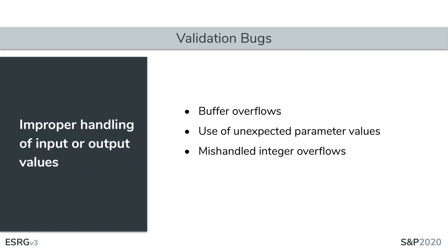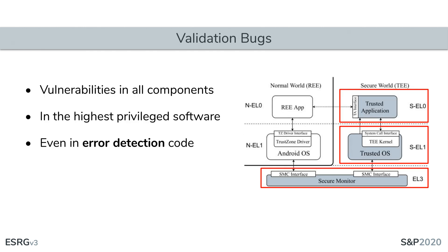Validation bugs involve improper handling of input and output values. Improper validation leads to buffer overflows, use of unexpected parameter values, and mishandled integer overflows. Validation bugs occur in all secure software components — trusted applications, which comprise most of the code in TE and implement complex features; the trusted OS, which has access to all system resources and whose compromise severely affects the system platform; and even the highest privileged software, the secure monitor.